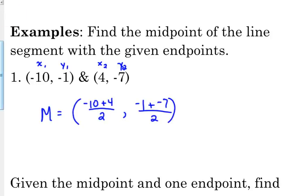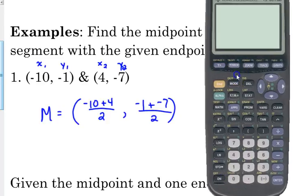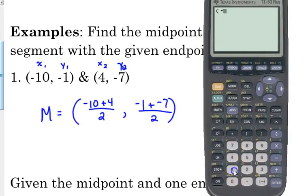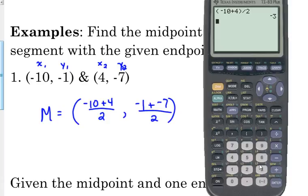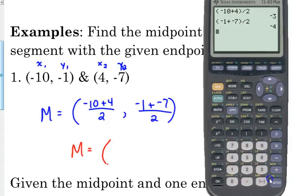If you do it in your calculator all at one time, you must put parentheses around the addition part — negative 10 plus 4 has to go in parentheses and then divide by 2. If you want to add the two numbers, press enter, then divide by 2, you're good. But if you want to do it all at one time, you need to put parentheses around it. Negative 10 plus 4 divided by 2 is negative 3, and negative 1 plus negative 7 divided by 2 is negative 4. So our midpoint is the point negative 3, negative 4. If we plotted negative 10, negative 1 and 4, negative 7, then negative 3, negative 4 would be directly in between those two points.